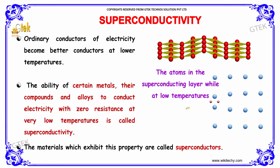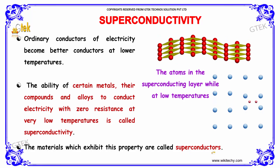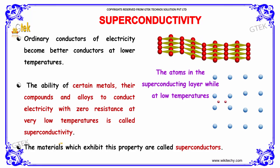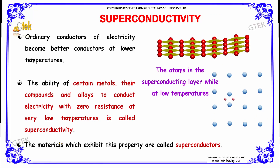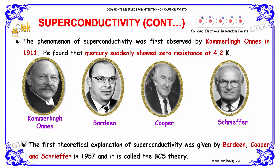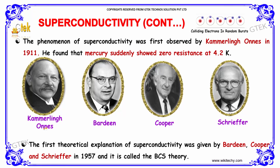The materials that exhibit this property are called superconductors, and the concept is called superconductivity. The phenomenon of superconductivity was first observed by the great physicist Kamerlingh Onnes in 1911. He found that mercury suddenly showed zero resistance at 4.2 Kelvin.